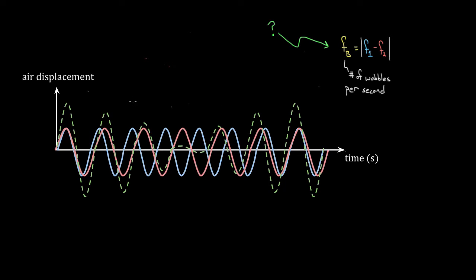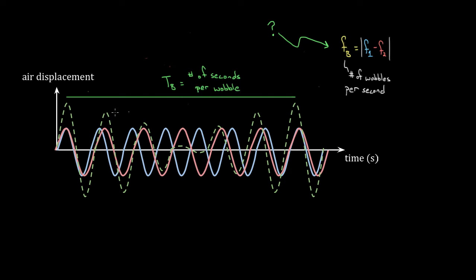The way we'll approach it is: instead of finding that directly, let's find the beat period first. If beat frequency is number of wobbles per second, then the beat period would just be the number of seconds per wobble — how long it takes to go from constructive all the way back to constructive again. If we can find this beat period, we know that frequency is always just one over the period. And finding the beat period means recognizing it's the time it takes for the waves to shift such that peaks originally overlap, and then they overlap again.